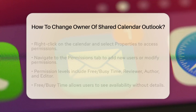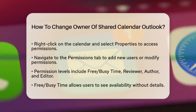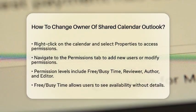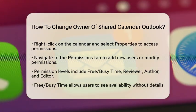To do this, right-click on the calendar you want to share and select Properties. From there, navigate to the Permissions tab. Here, you can click Add to add new users or modify existing permissions.